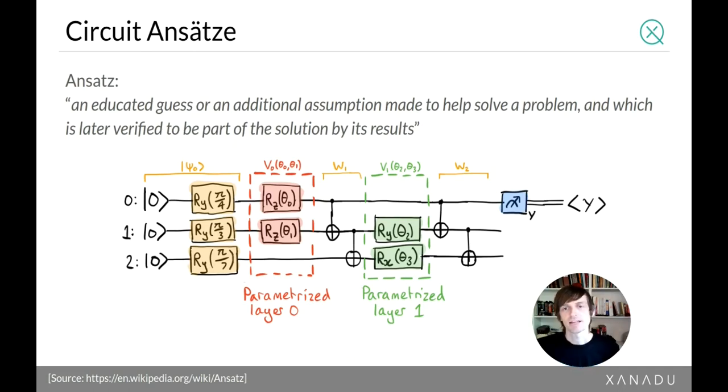A little bit more about the ansatz. Ansatz is a German word - in physics it means an educated guess or additional assumption chosen at the start but verified as correct throughout the problem. In variational circuits, the ansatz is the particular structure of the quantum circuit. Sometimes the structure is completely fixed by the problem and other times it's more flexible or completely selectable by the user. It's still an open question about what are the best ansatz for different problems.